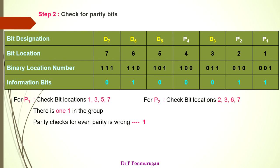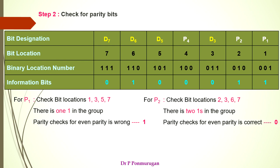For the next bit P2, we check bit locations 2, 3, 6, and 7. Here we have two 1s in the group, which satisfies the even parity condition. So this is correct, and we place a 0 since it satisfies the assumed parity condition.